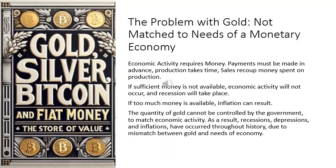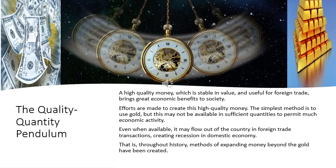With these preliminaries out of the way, we can now turn to explain the quality-quantity pendulum. High quality money brings a lot of benefits to the economy, and therefore efforts are made by society to create this high quality money. The simplest way to do so is to use gold, but this may not be available in sufficient quantities, and even when it is available, foreign trade may lead to its export, causing low amounts of gold within the economy and recession in the domestic economy.